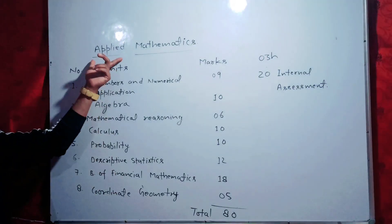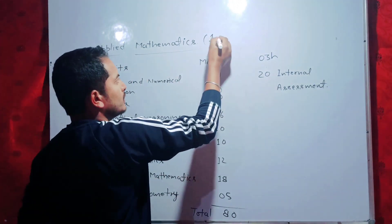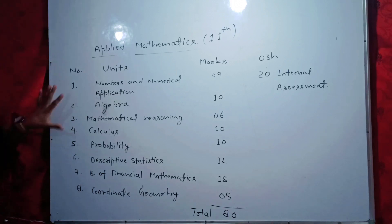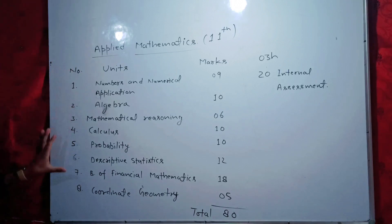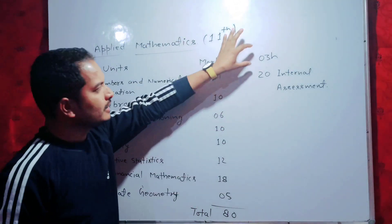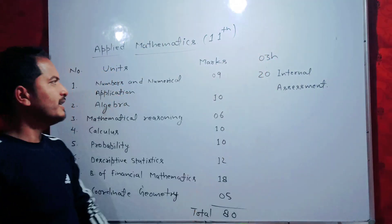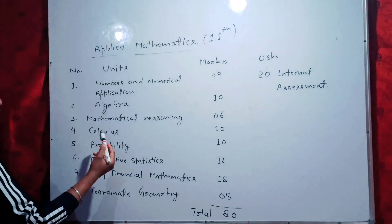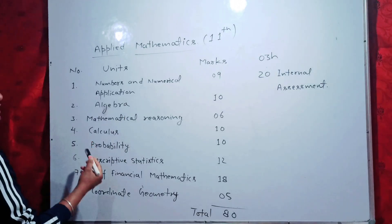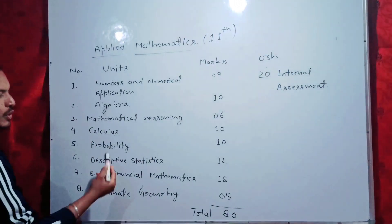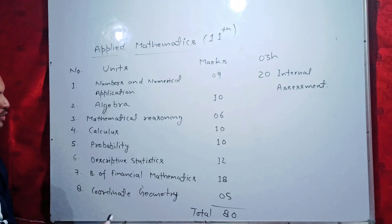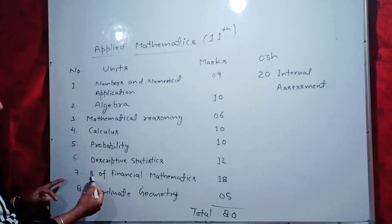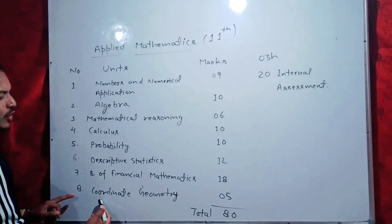Here is the syllabus of applied mathematics in Class 11. There are serial numbers and units — there are total 8 units along with marks and internal assessment marks. The first chapter is numbers and numerical application. The second chapter is algebra. The third chapter is mathematical reasoning. The fourth chapter is calculus. The fifth chapter is probability. The sixth chapter is descriptive statistics. The seventh chapter is basic and financial mathematics. And the eighth chapter is coordinate geometry.